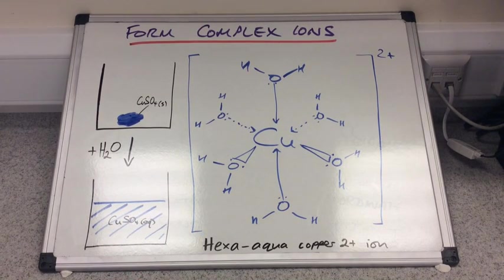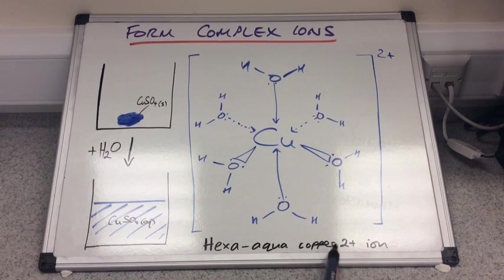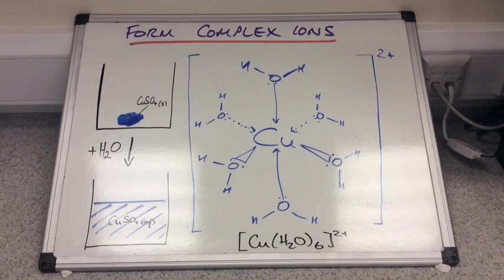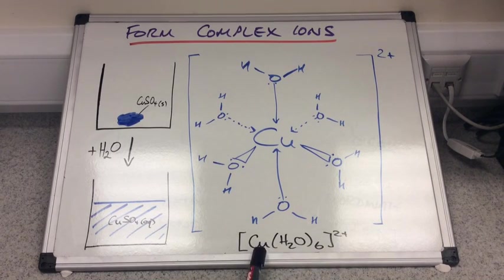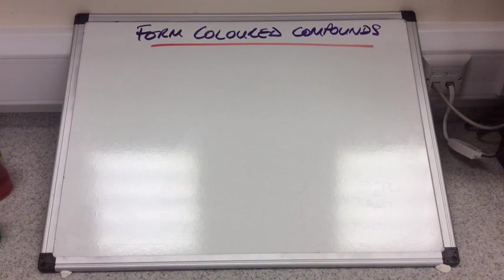This is known as the hexa-aqua-copper 2+ ion. Hexa means 6, aqua means water, and obviously copper is in the 2+ oxidation state. The formula is written with square brackets: [Cu(H₂O)₆]²⁺. Water is a neutrally charged molecule, so the 2+ charge comes from the copper 2+ ion.